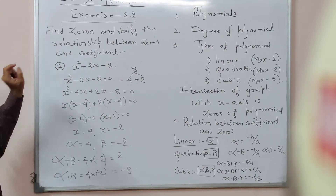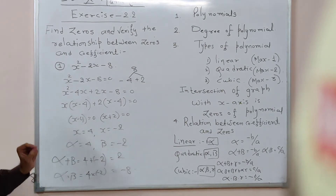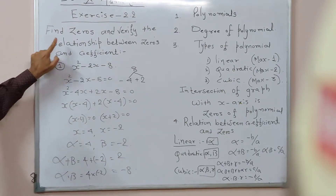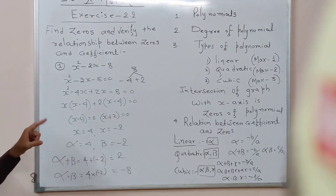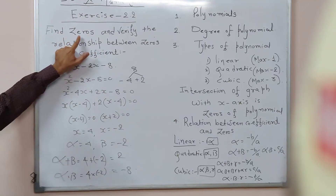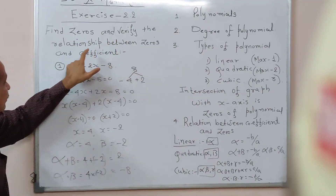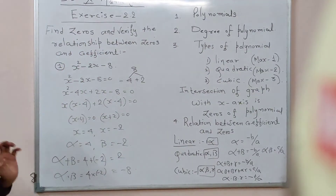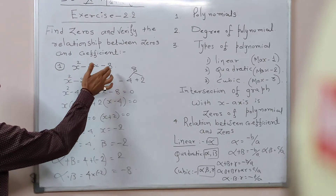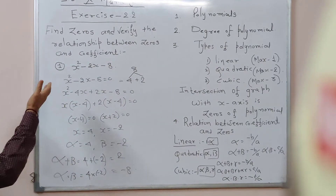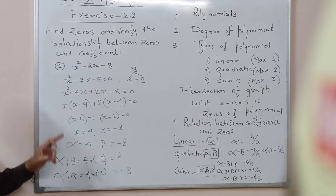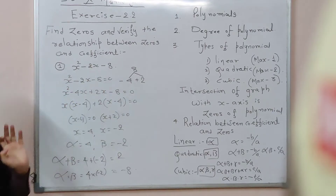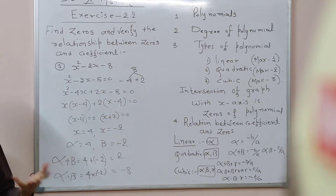Now let us start exercise 2.2, first example. Find the zeros and verify the relation between zeros and coefficients. Here you have to find out the zeros and then verify the relationship between zeros and coefficients. The first example is x squared minus 2x minus 8. It is a quadratic polynomial, and your aim is to find out the zeros. So first of all, equate the polynomial to zero.